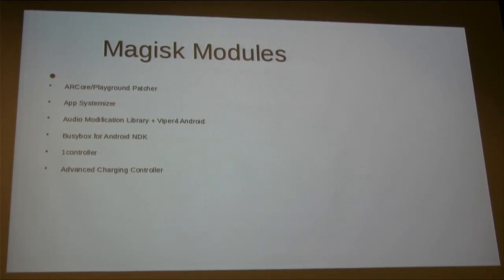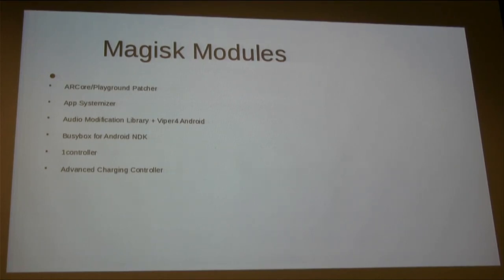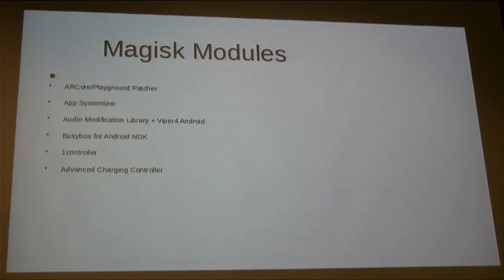ARCore Playground Patcher is a Magisk module which works around one of Google's limitations — ARCore is only available for a small group of phones, but with this module you can just install it on your phone and have ARCore features. Pokemon Go and the Niantic games are one of the big reasons to do this, but there are also fun experiments and apps on the Play Store which use AR.